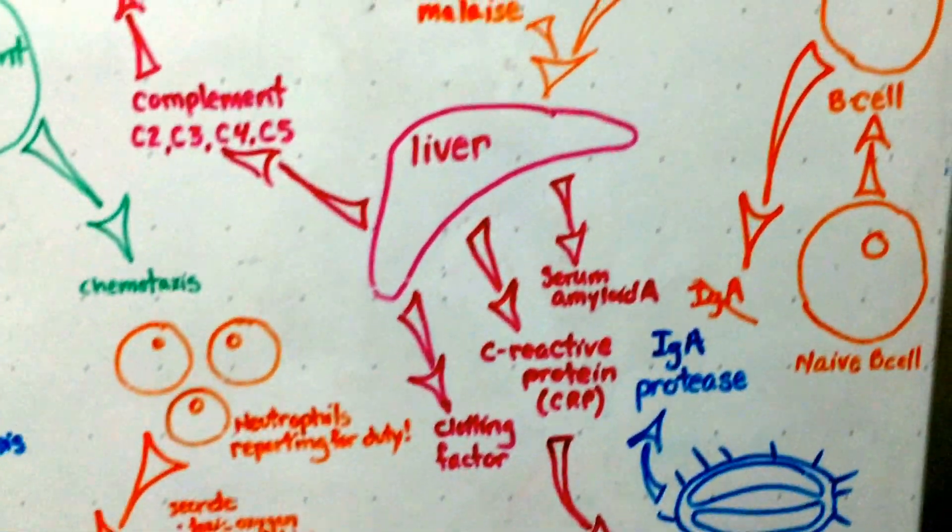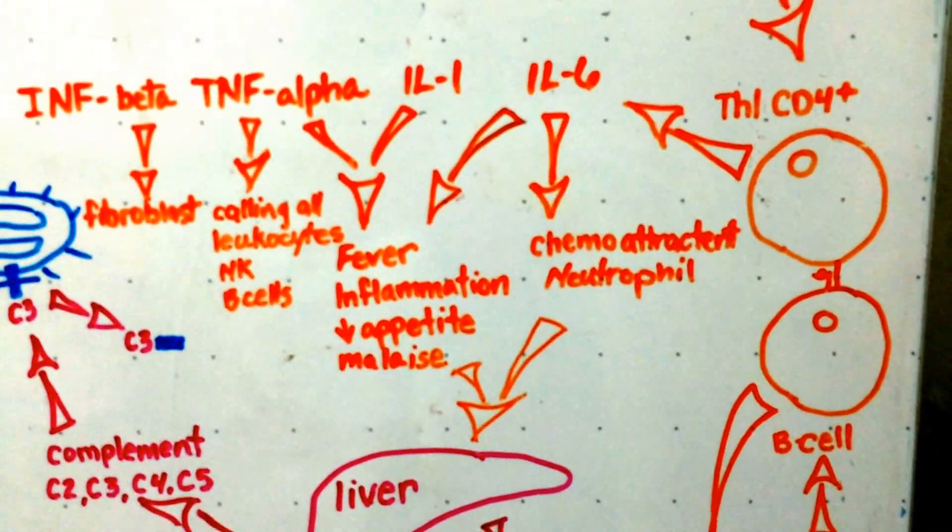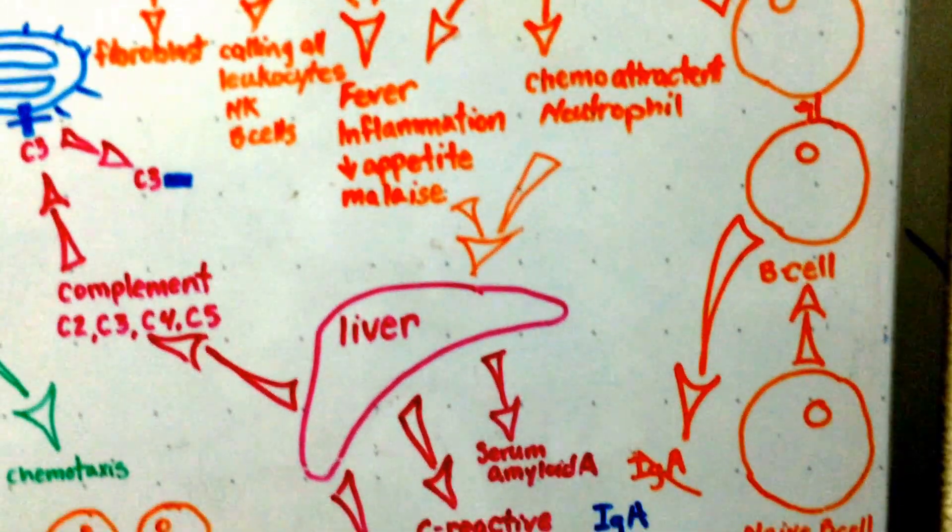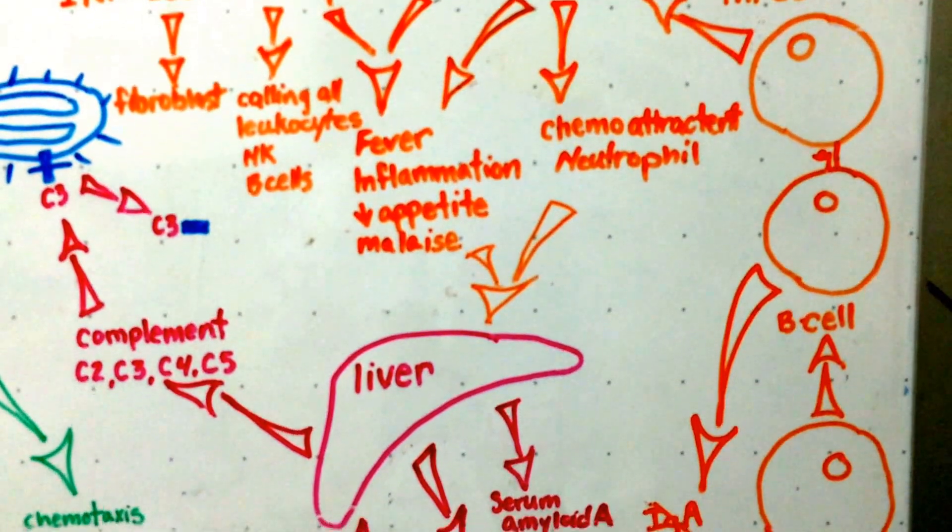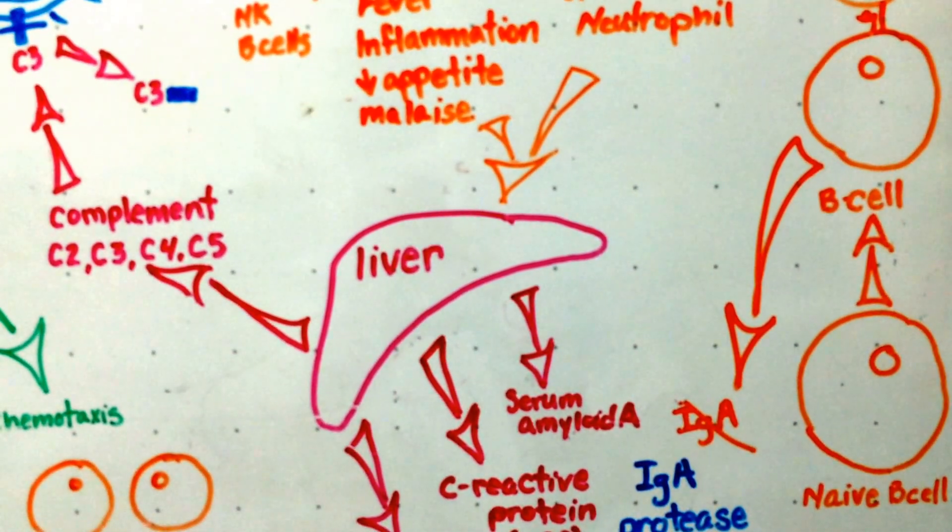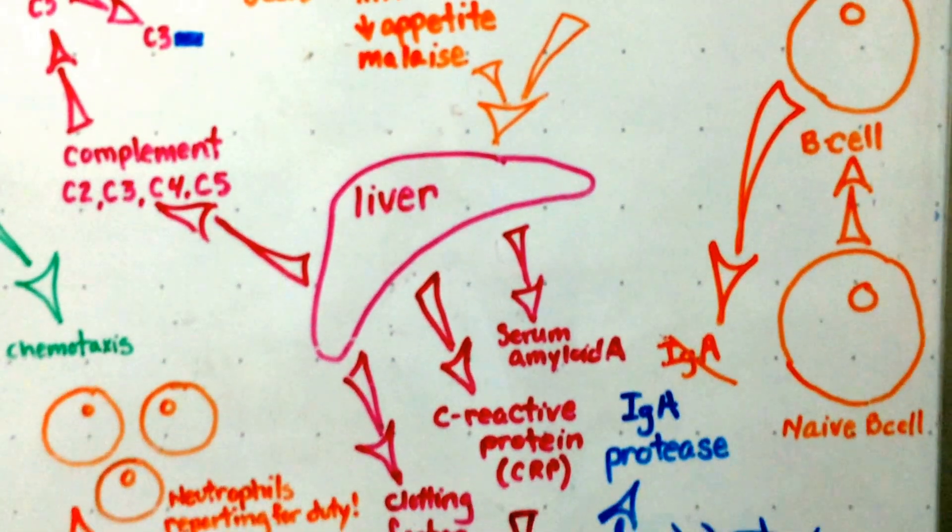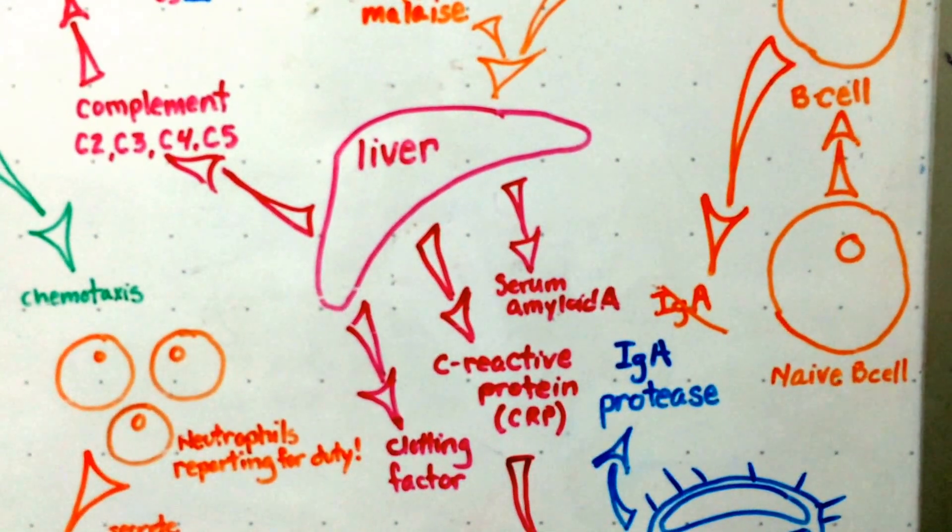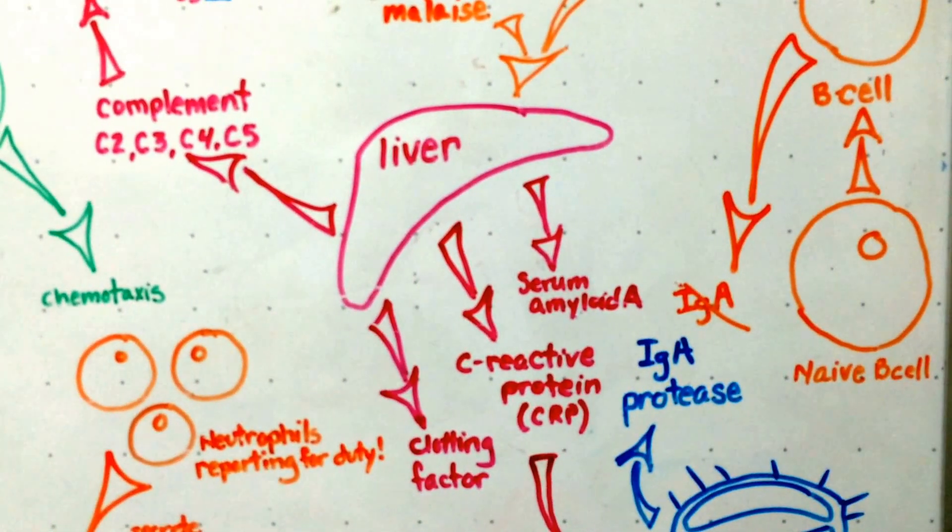Okay. So our Th1 CD4 cell that was activated also found a naive B cell and activated that naive B cell which is producing IgA antibody, but our bacteria is able to produce an enzyme to make that ineffective.